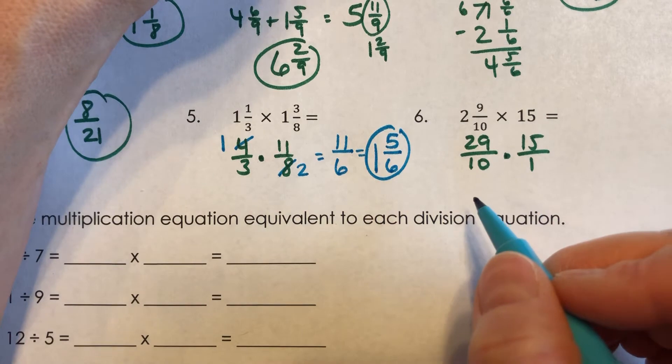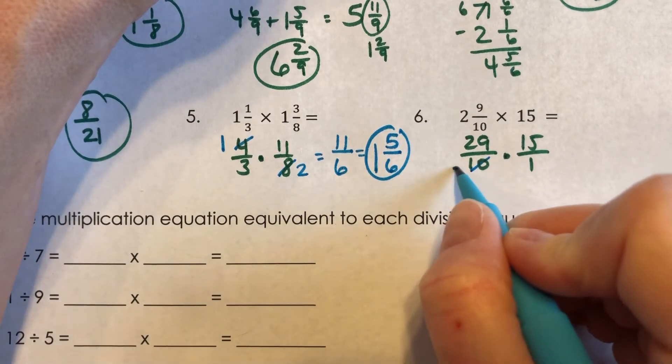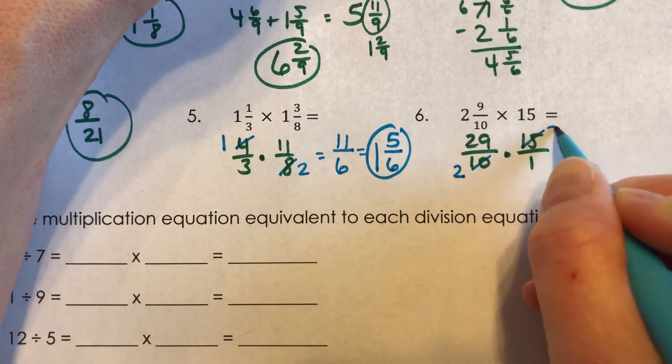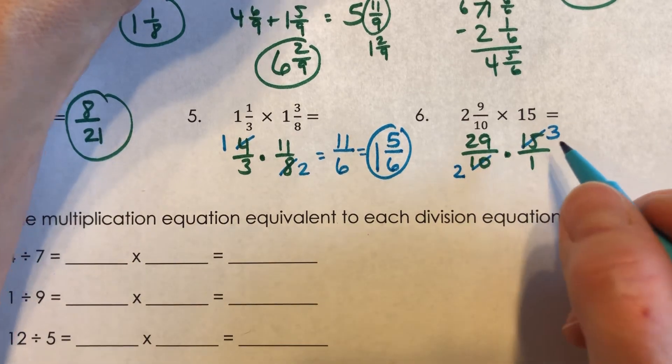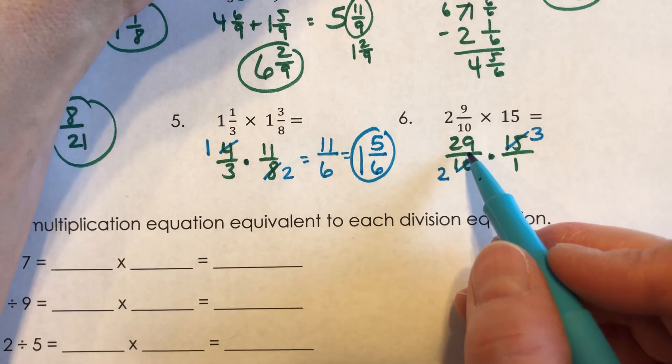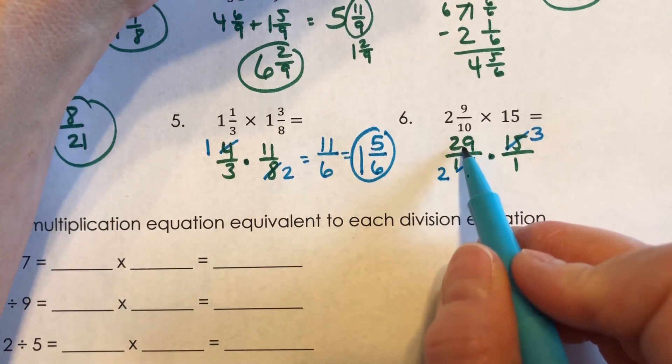With ten and fifteen, five goes into both of those. Five goes into ten twice. And five goes into fifteen three times. So now, I do need to take twenty-nine times three. One thing you could do is you could go thirty, sixty, ninety. And then take three away from that.